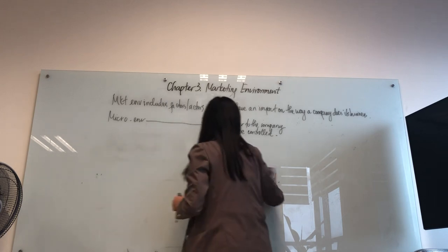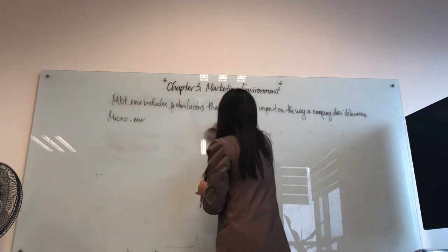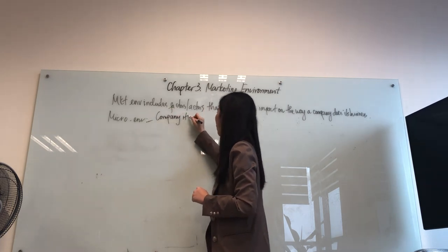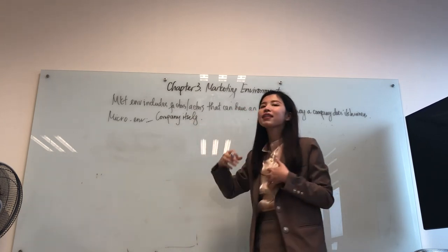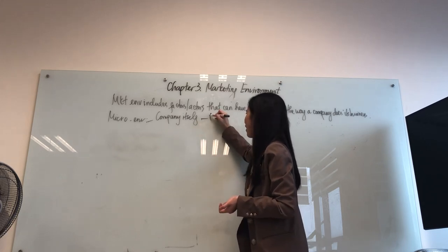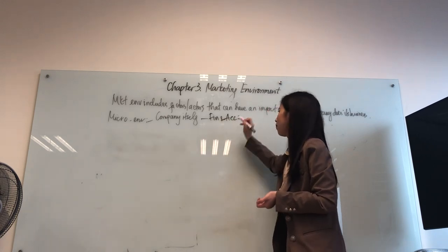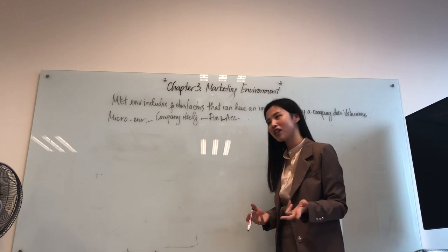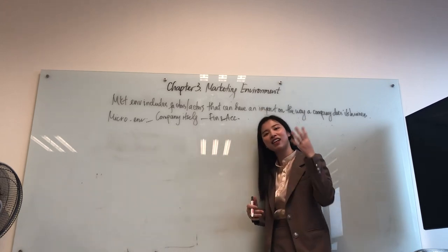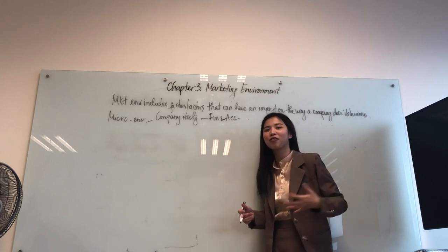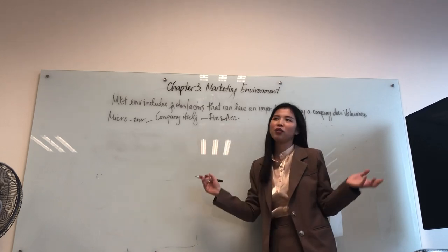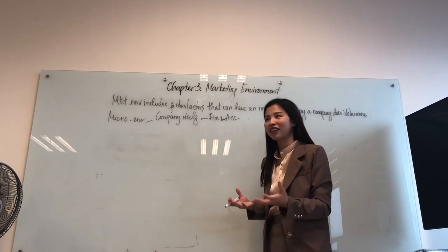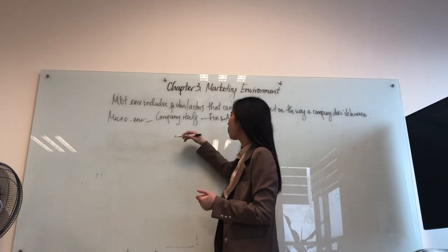Let's look at these in a little more detail. The micro environment includes the company itself. This means the marketing department is constantly influenced by, say, the financial department or the accounting department. These people seem to always be skeptical about marketing efforts — if you write a campaign plan asking for a 1 billion budget, the finance and accounting people may say it's too expensive and only give you 300 million. So they can have a very strong impact on the way we do our marketing job.